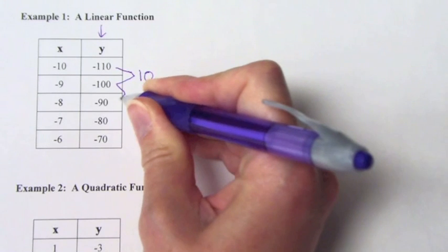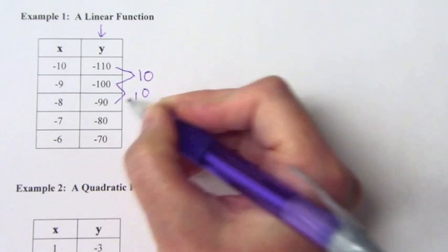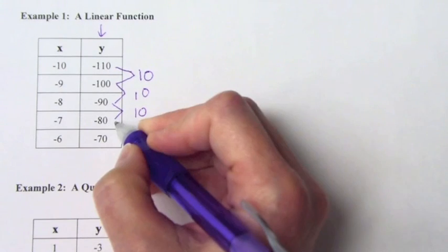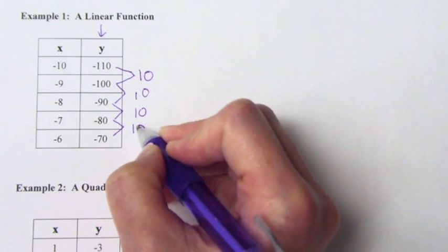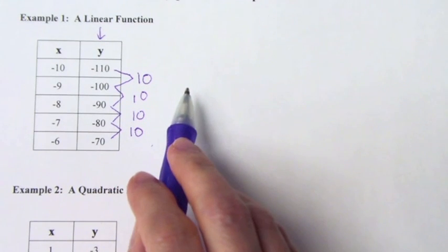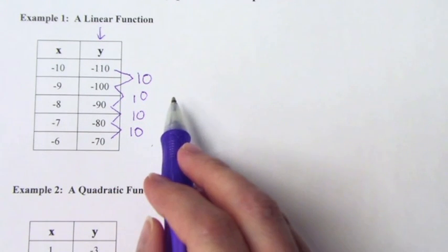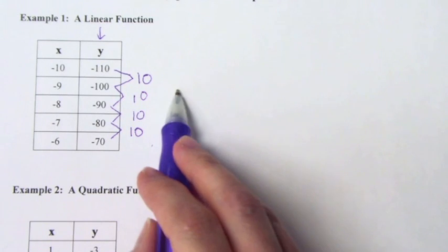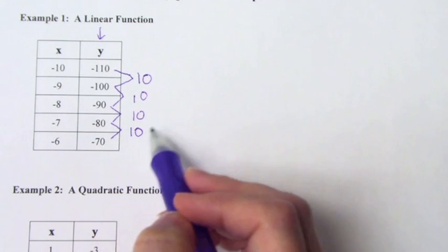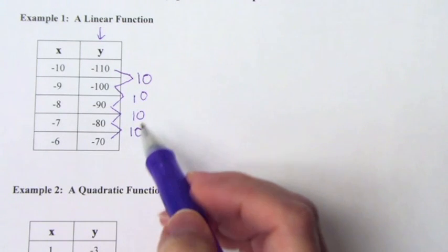How about between 100 and 90? Difference of 10. 90 and 80? Also a difference of 10. 80 and 70? 10. When this happens, it's a linear function. So what you can do is you look at your y values and find the differences in them, and if they're all the same, then it is a linear function.